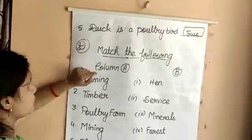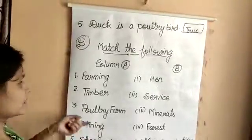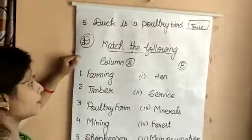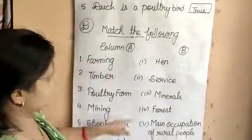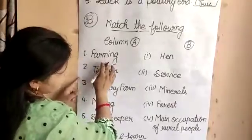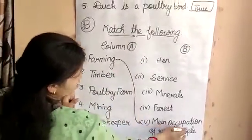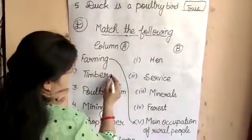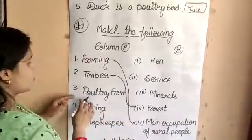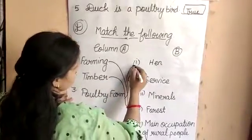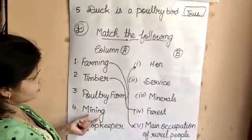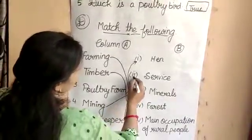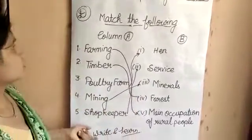Next activity: Match the Following — Column A and Column B. If you have the book, match in your copy; if you only have a copy, write it down. Farming matches with the main occupation of rural people. Timber matches with forest. Mining matches with minerals. Shopkeeper matches with service. That completes the Match the Following and True/False exercises.